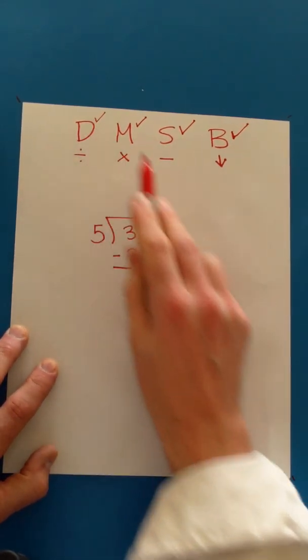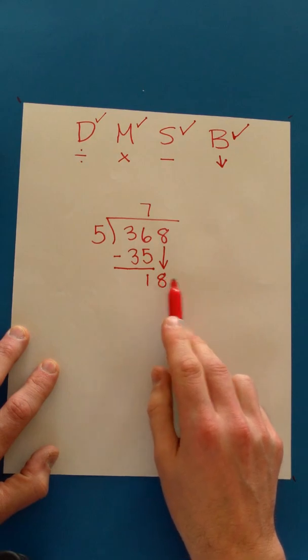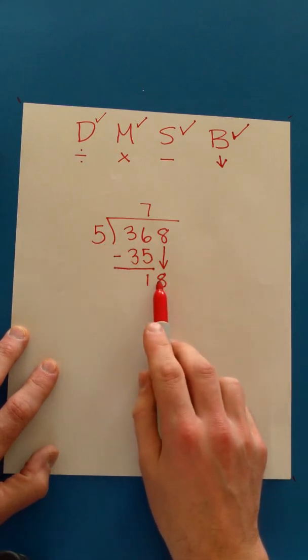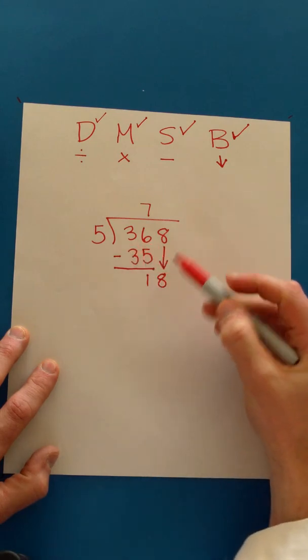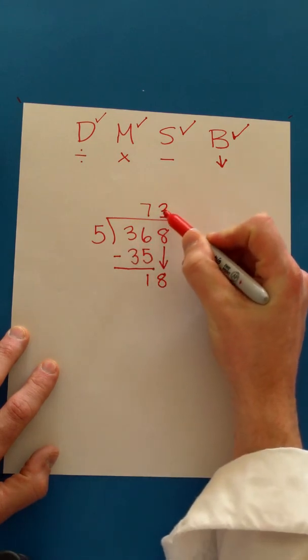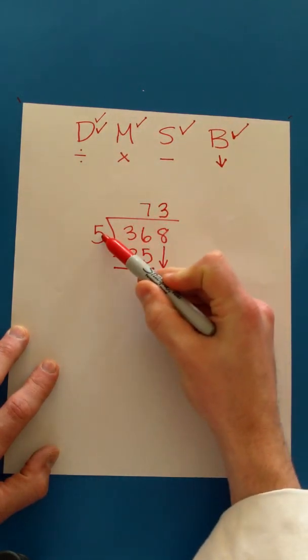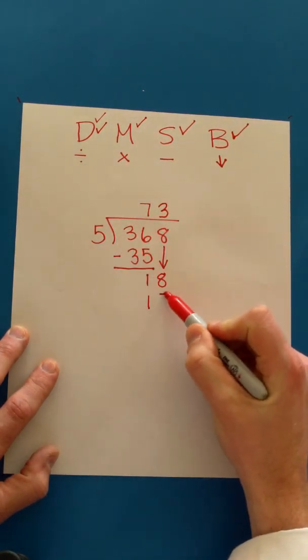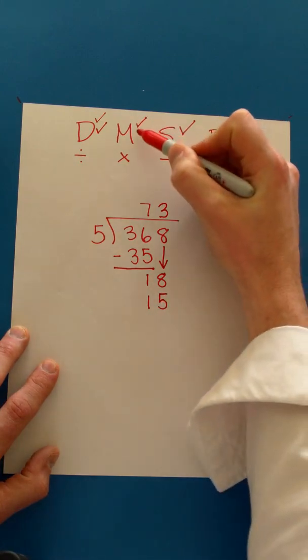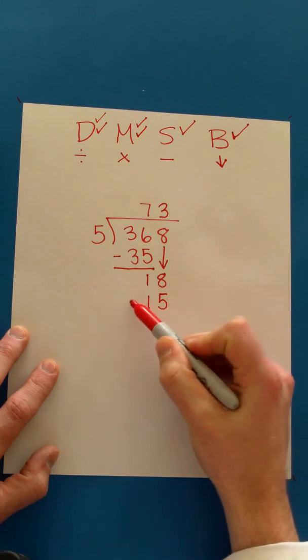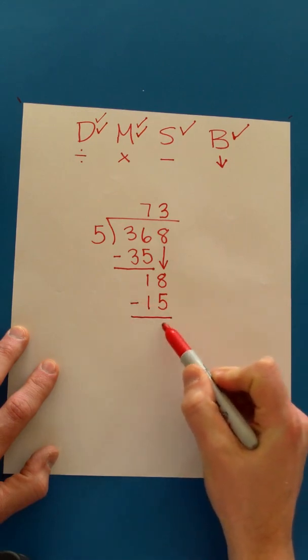So let's start dividing again. This time, we're going to find out how many times 5 can go into 18. 5 goes into 18 three times. 3 times 5 is 15. 18 take away 15 is 3.